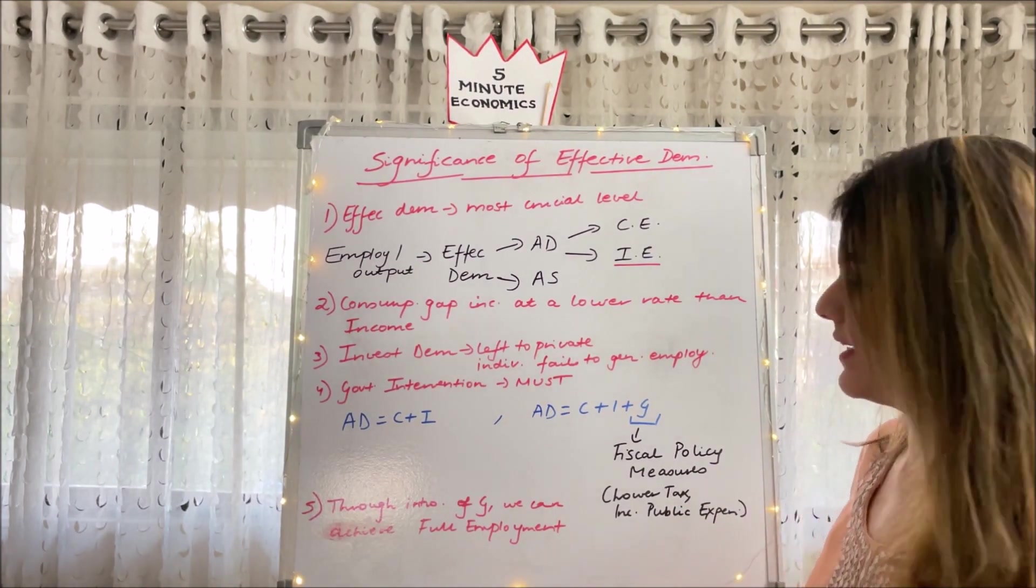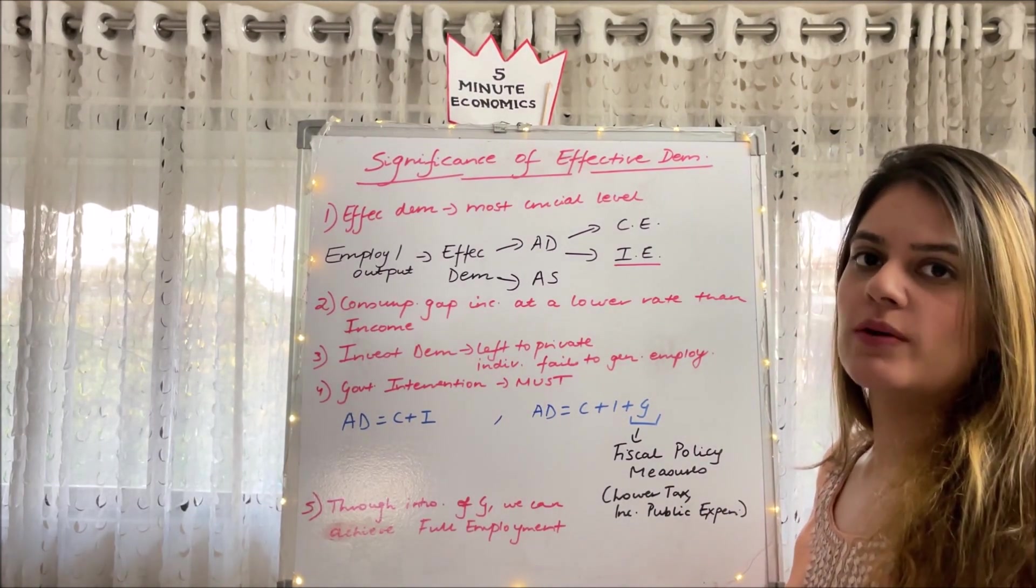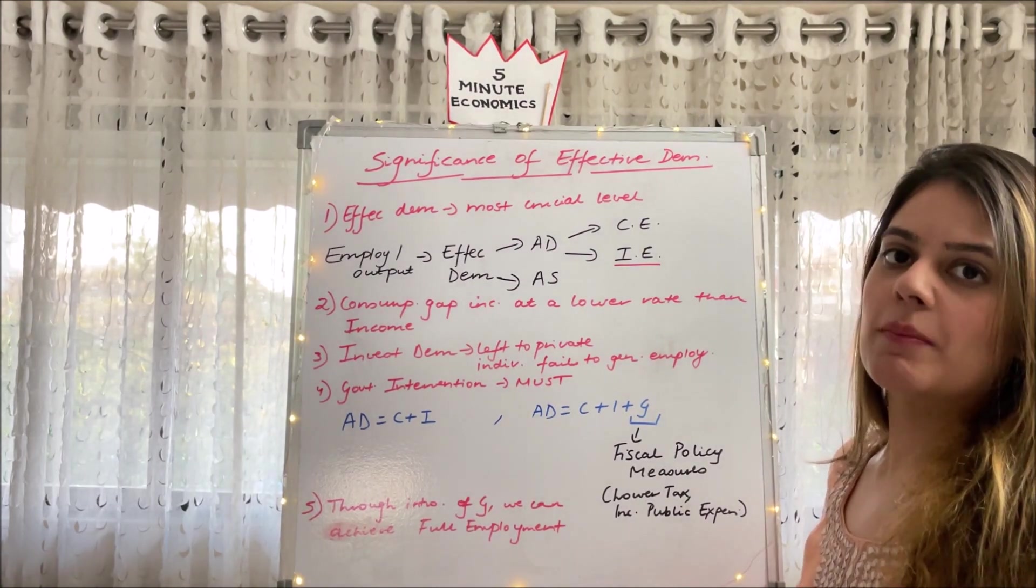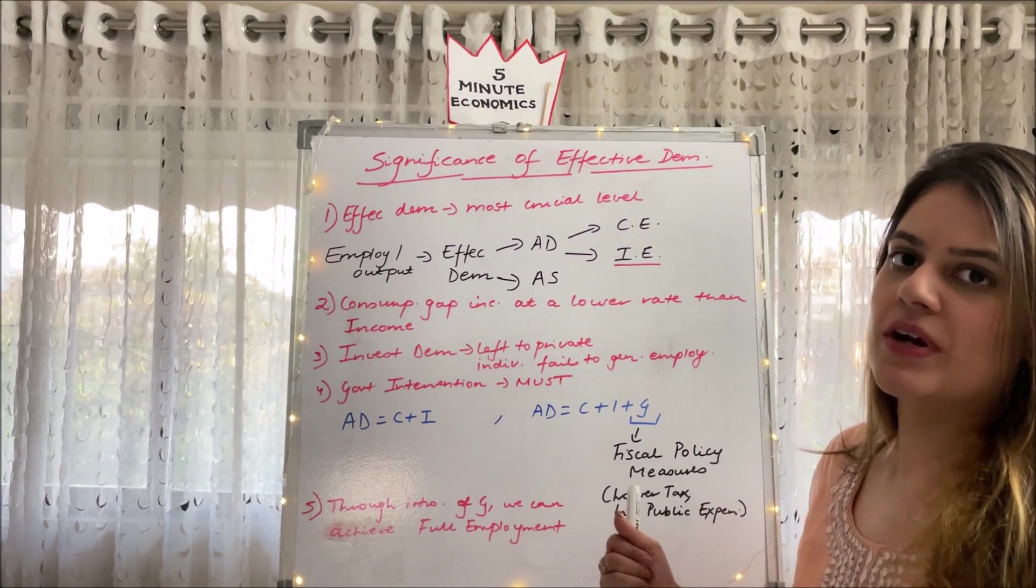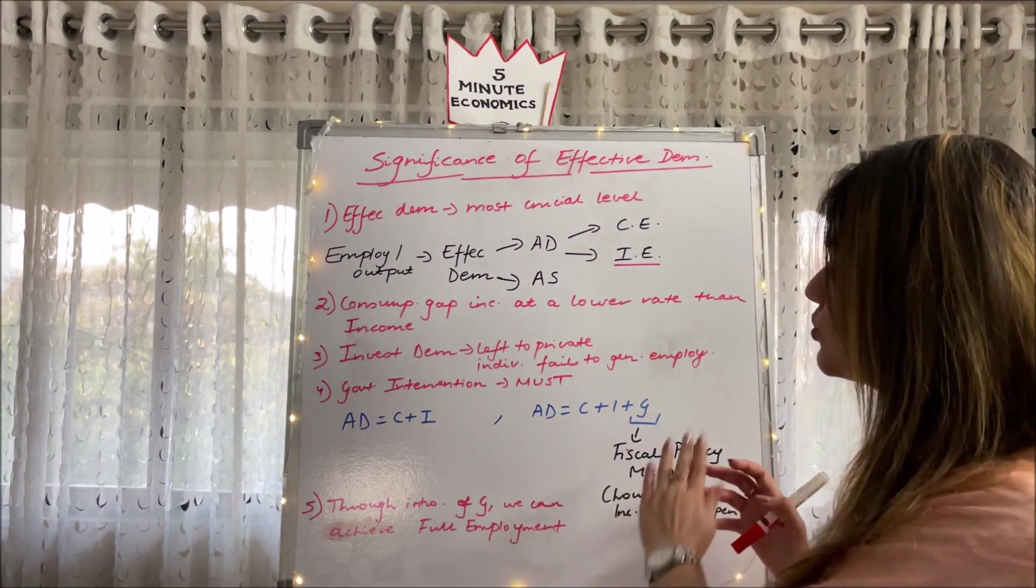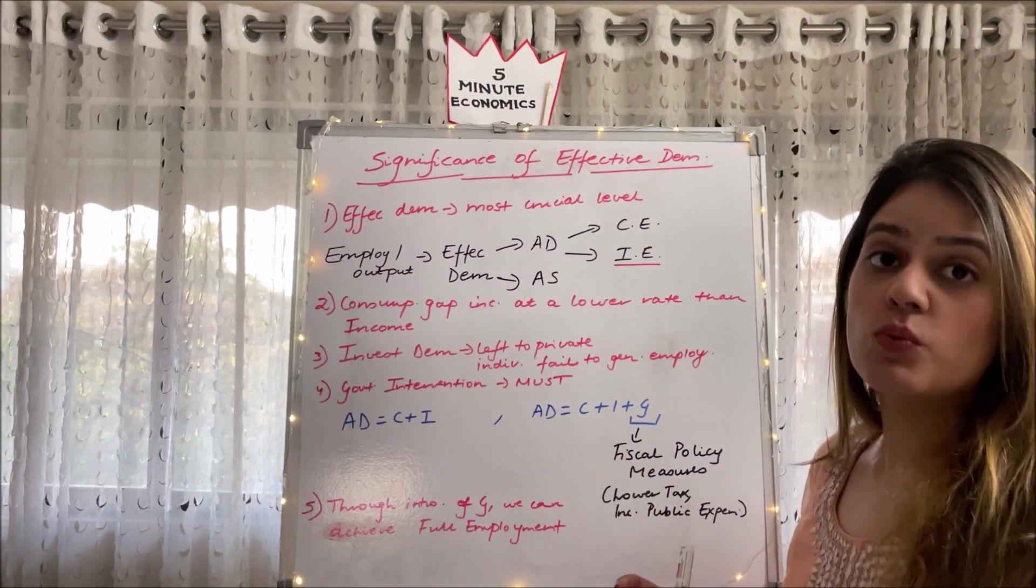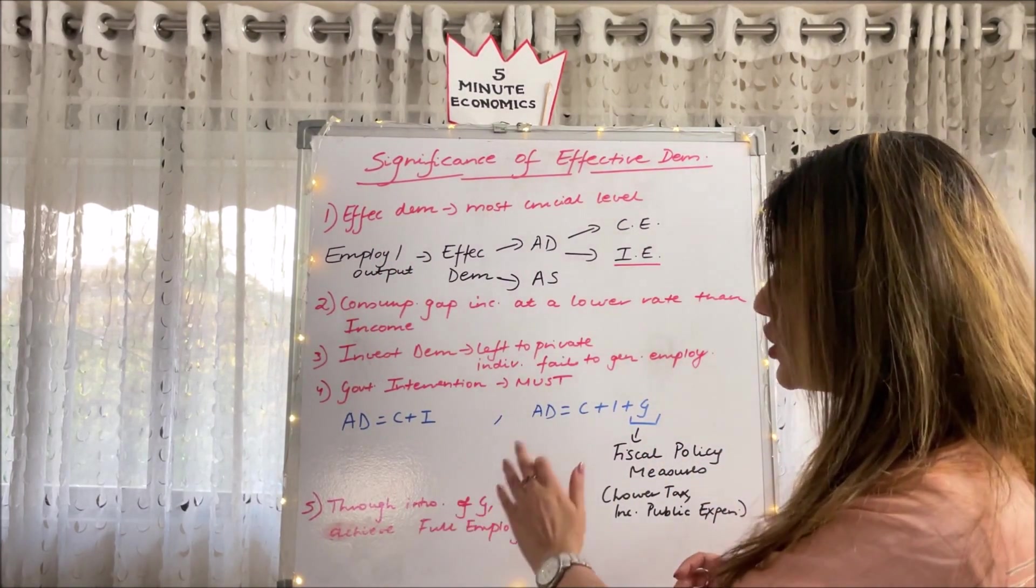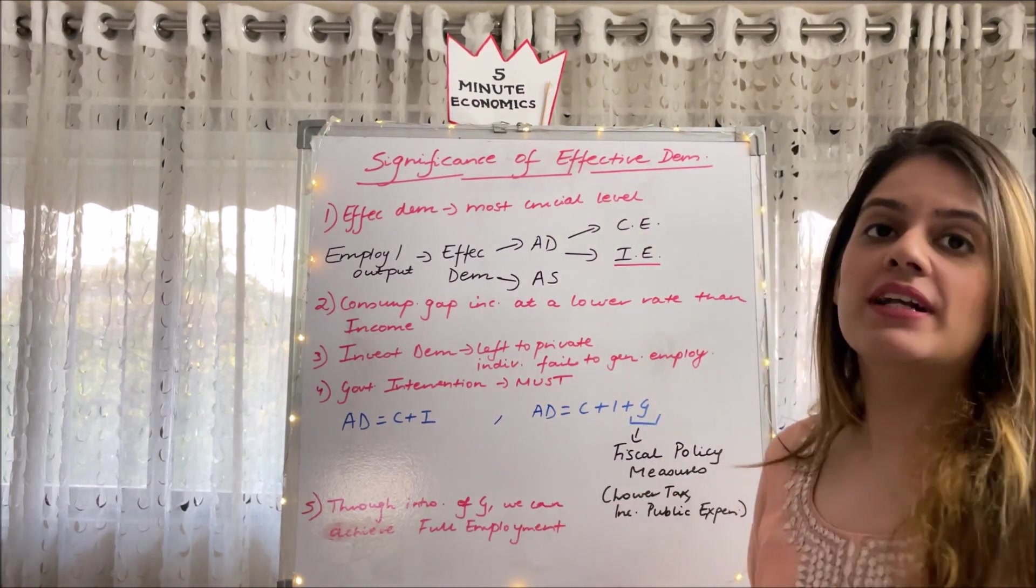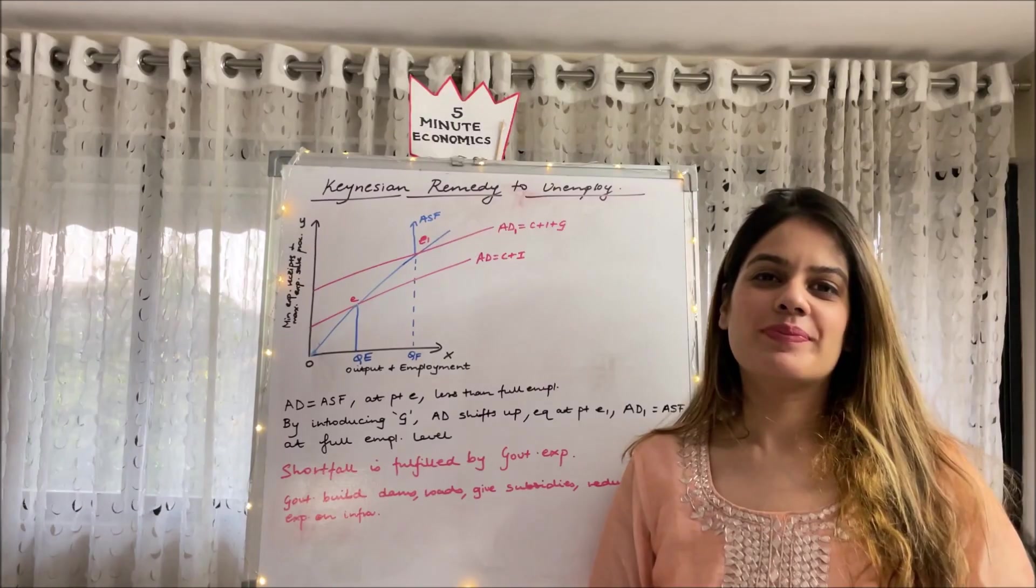I've also made a video on fiscal policy, I'll attach its link in the comment section below. So fiscal policy, basically two things should strike your mind: first, the government can lower the taxes; second, the government can increase public expenditure. So tax and public expenditure basically make up the fiscal policy. So that is how through these measures employment and output can increase. That is what Keynes said: through introduction of G, which is government expenditure, we can achieve full employment under the Keynesian theory.